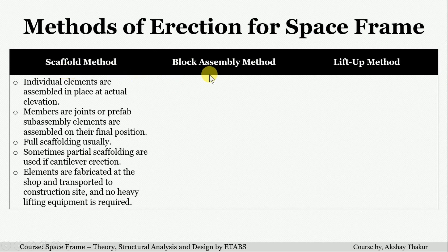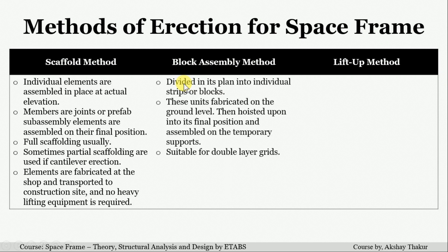Now let's see the block assembly method. In this method, the whole space frame is divided into strips or blocks according to its plan, and these individual strips or blocks are placed by lifting equipment. The blocks are assembled at the ground level and then hoisted to their final positions, making this a stepwise process.